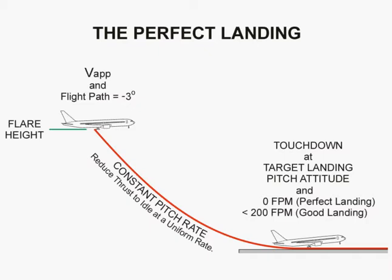In practice, this is achieved by comparing height above the ground with pitch attitude, so that the target pitch attitude is reached just before touchdown. A perfect landing would have the wheels touch at a rate of descent of zero feet per minute, but a rate of descent of 200 feet per minute is considered to be a smooth landing.